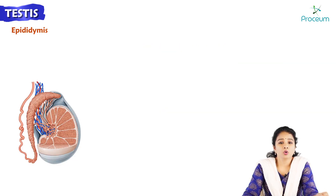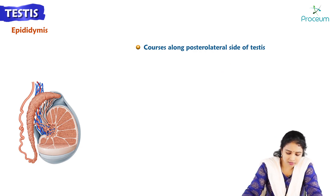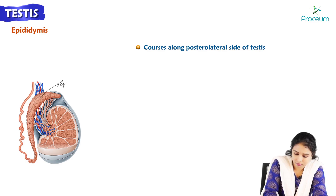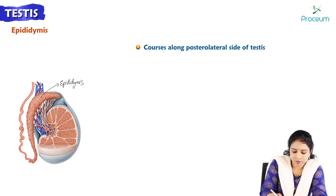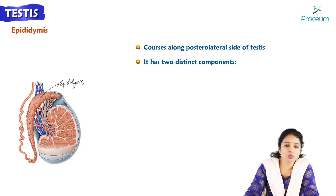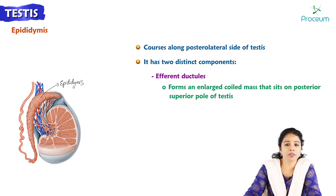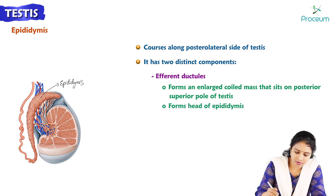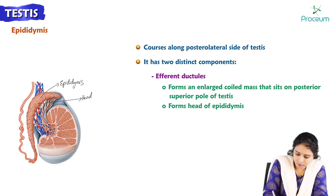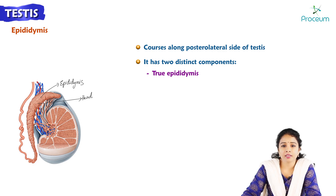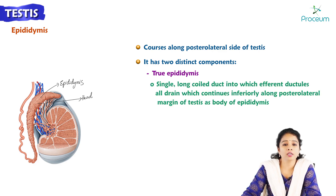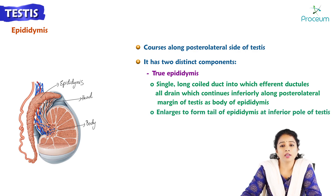The epididymis courses along the posterolateral aspect of the testis. It has two distinct components: efferent ductules, which form an enlarged coiled mass that sits on the posterosuperior pole of the testis and forms the head of the epididymis; and the true epididymis, which is a single long coiled duct into which the efferent ductules all drain, continuing inferiorly along the posterolateral margin as the body, and enlarging to form the tail of the epididymis at the inferior pole of the testis.